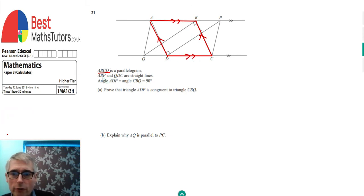And we're also told ABP, so the line horizontally on the top from A to P is a straight line. And that QBC, sorry, QDC is also a straight line, the horizontal line at the bottom. We're told that angle ADP and QBC are both 90. So that's this one and this one.